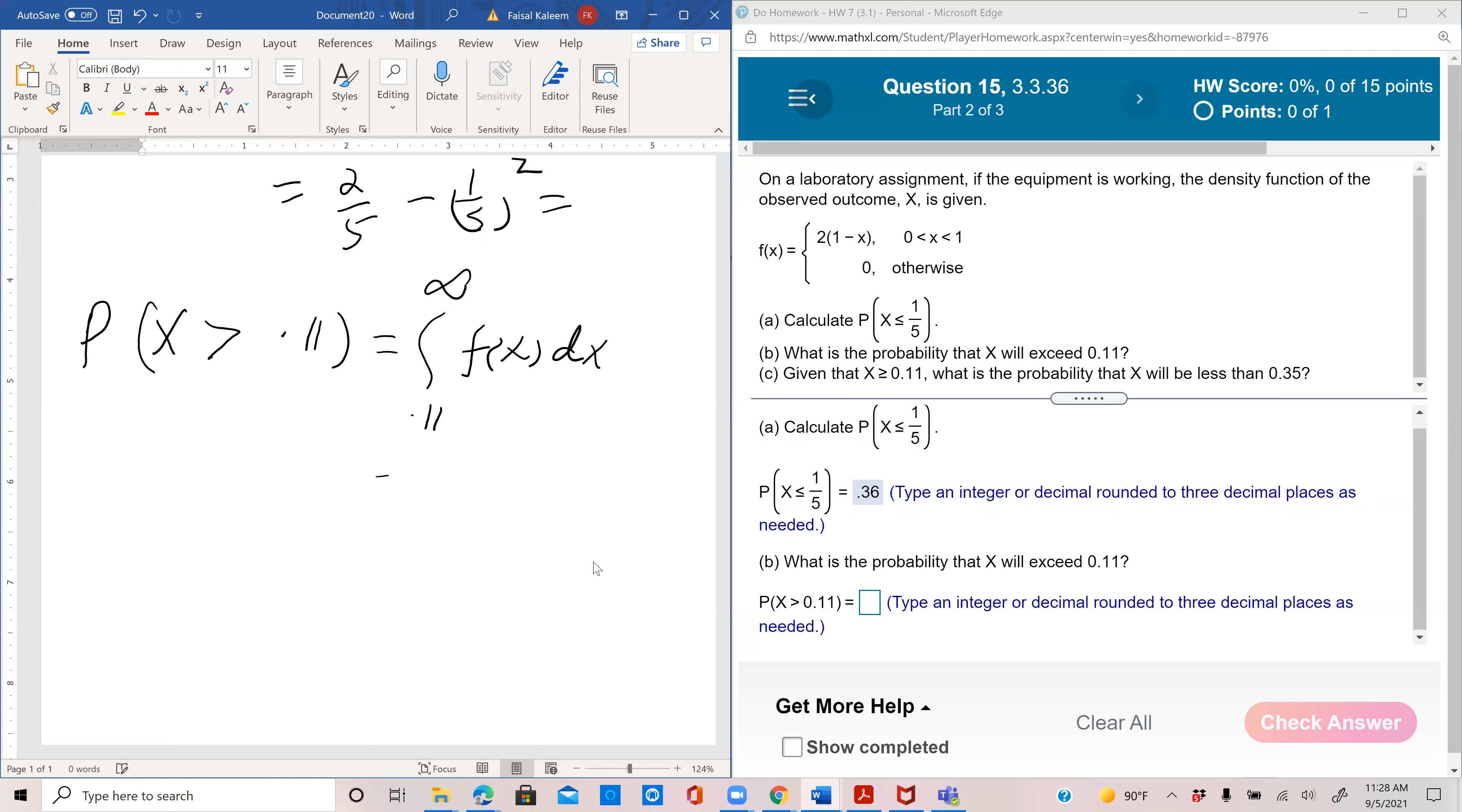But you don't go all the way up to infinity, you finish at one, otherwise everything else is zero. So two times one minus x, and once again...